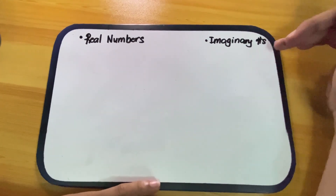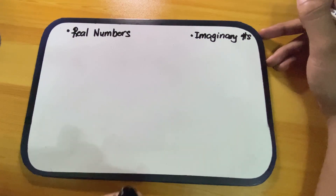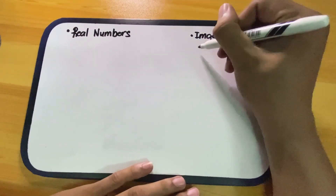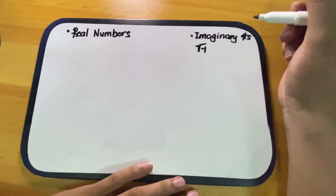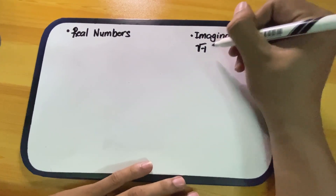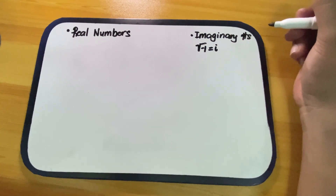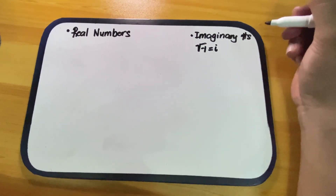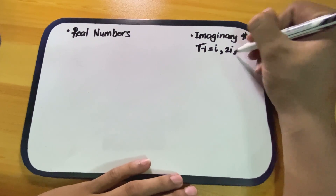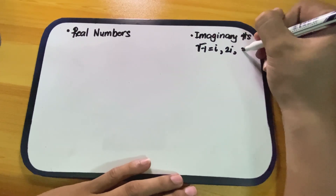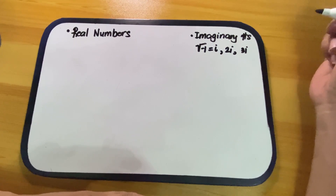Let's go first to the imaginary numbers. When can we say that a number is imaginary? If you have the square root of negative one, that can be expressed as i, which represents an imaginary number. So if you have 2i or 3i, that is an imaginary number.